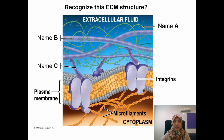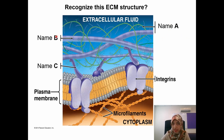Do you recognize these structures? What are A, B, and C? A is the proteoglycan complex. B is collagen. And C is hyaluronidase.